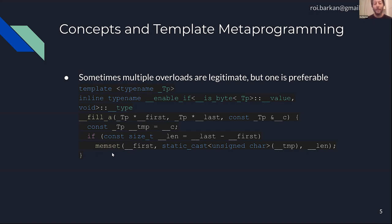If the STL implementer didn't do this trick, it was up to the compiler to convert a for loop into memset. But template metaprogramming and enable_if allow the library implementer to force the compiler to choose a specific algorithm that is the same in functionality but different in other properties.